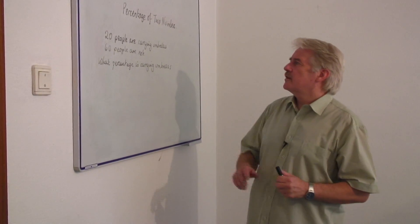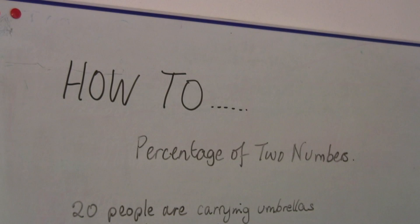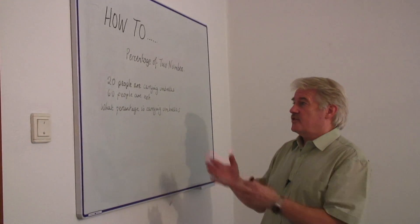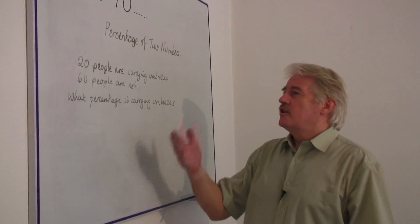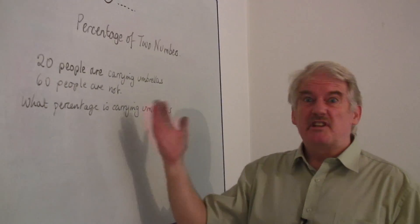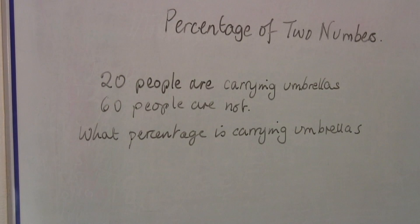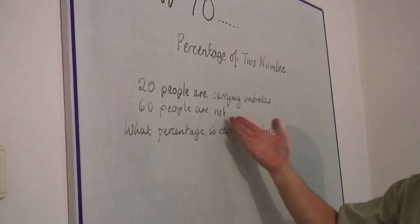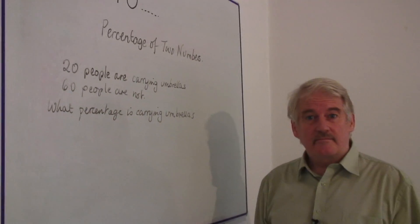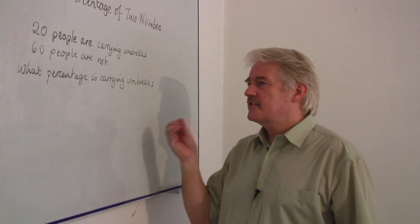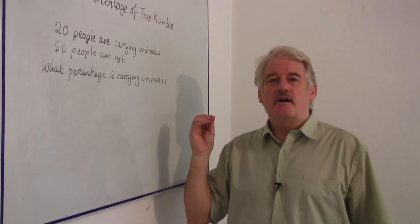Hi, I'm Steve Jones and I'm going to tell you how to work out the percentage of two numbers. I've got a simple problem here — it's a British problem actually because it's in the rain. Twenty people are carrying umbrellas, sixty people are not and they're going to get wet. So the question is: what percentage is actually carrying umbrellas?